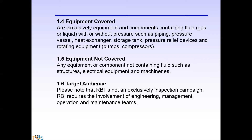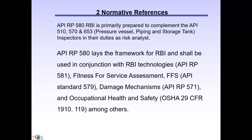Practically, this covers heat exchangers and storage tanks. Structures and electrical equipment do not leak and cannot fail in the same way, so they are not covered. You should also know the target audience and normative references — API 579 and 581 for fitness for service, and RVI technologies, which complement RBI and are useful tools to carry it out.